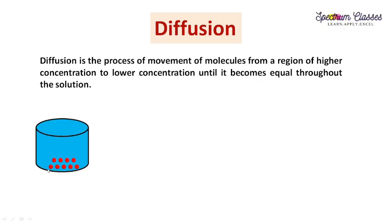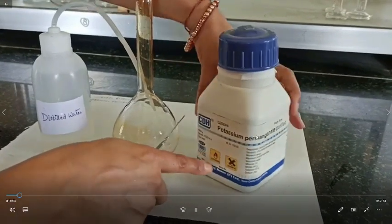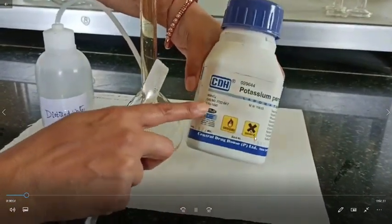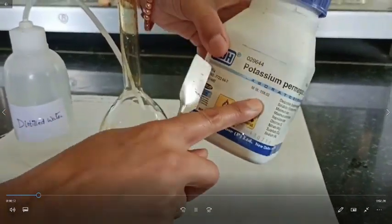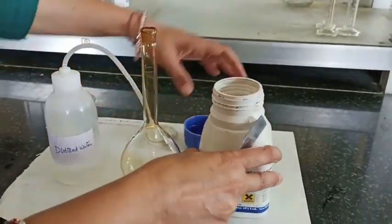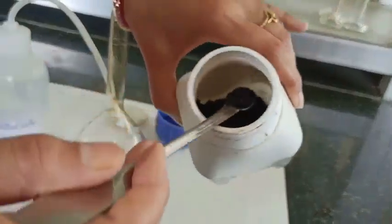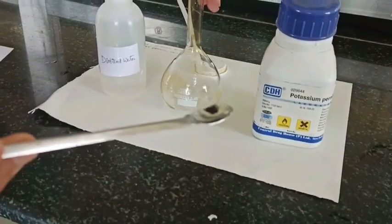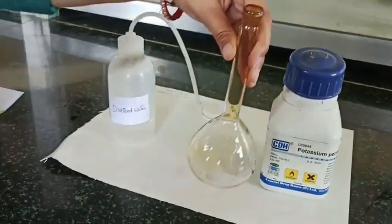These red dots show the solute molecules. I'll show you how this looks — this is potassium permanganate, our solute. It is oxidizing and harmful. This is its CAS number, this is its molecular formula, and this is its molecular weight. It looks like very beautiful purple color crystals.